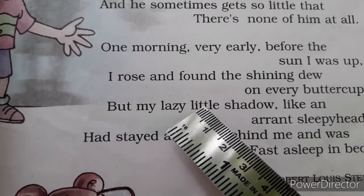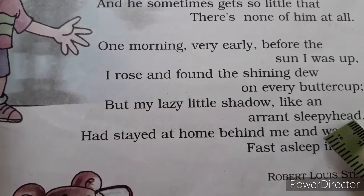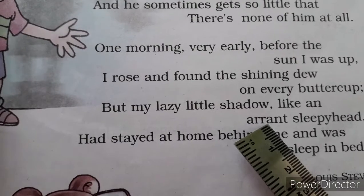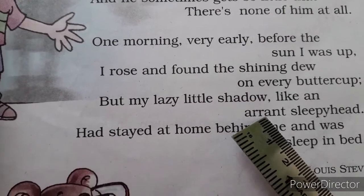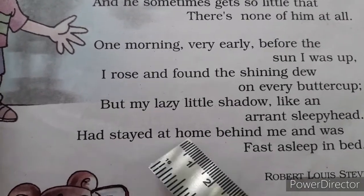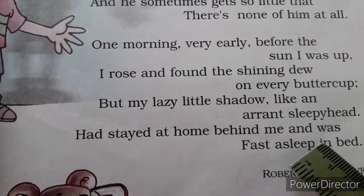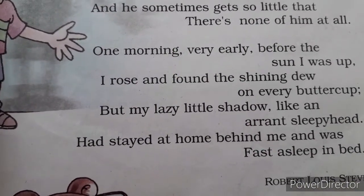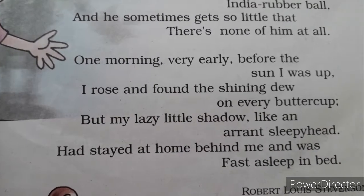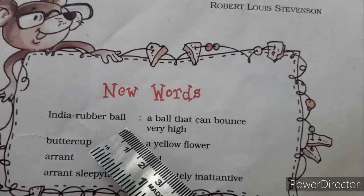But my lazy little shadow, like an errant sleepy head — errant ka matlab hai bed — ab meri jo alsi shadow thi, woh ab tak bed pe hi so rahi thi. Had stayed at home behind me and was fast asleep in bed. Main jab bhi bahar jaati, woh meri bed pe so jati thi.